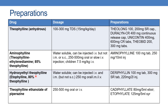The next drug is hydroxyethyl theophylline. This is also water-soluble and can be injected intravenously and intramuscularly but not subcutaneously. The dose is 250 mg oral, intramuscular, or IV. The preparation is Cediphyllin, available as 80 mg per 5 ml elixir, or Ethophyllate, available as 125 mg per 5 ml syrup.